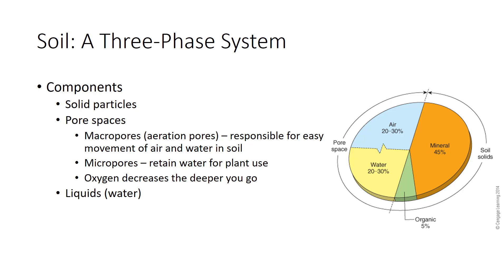Commonly about half the volume of soil is solid material with some combination of air and water, ideally equal proportions. A large pore may be rich in oxygen, while a small pore, a fraction of an inch away, contains water and is devoid of oxygen. Those large pores, called macropores or aeration pores, are largely responsible for easy movement of air and water in the soil and for providing space for air, while smaller micropores retain water for plant use. Generally, soil is richest in oxygen near the surface, while deeper layers may be very low in oxygen because the atmosphere is farther away and pathways for diffusion are much longer. This, in turn, influences distribution of roots in soil.